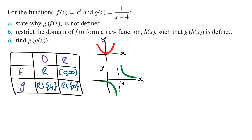From here, we can see that the range of the inner function f(x) is not a subset of the domain of the outer function g(x). The range of f is from 0 to infinity, and it includes the number 4. However, the domain of g does not include the number 4. And so this means the composite function g∘f(x) is not defined.